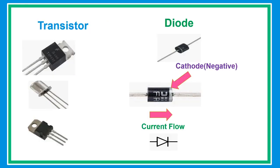A transistor is a semiconductor device used to amplify or switch electronic signals and electrical power. A diode is a two-terminal electronic component that conducts current primarily in one direction.